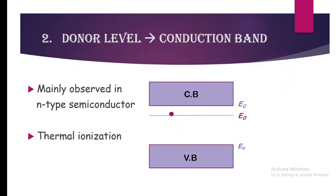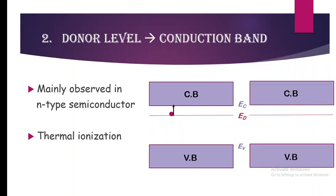The energy required is very small — the binding energy is very much less compared to the thermal energy even at room temperature. So the electron present at the donor level ionizes and shifts to the conduction band.